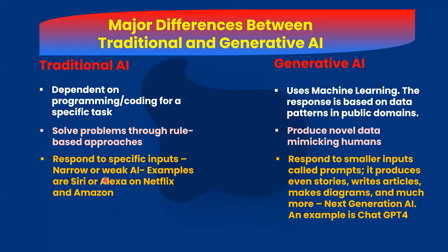3. Traditional AI utilizes narrow or weak AI — examples are Siri or Alexa, on Netflix and Amazon. Generative AI responds to queries; it can tell stories, write articles, make diagrams, and much more like a human being. It is known as Strong AI or Next Generation AI. An example is ChatGPT 4.